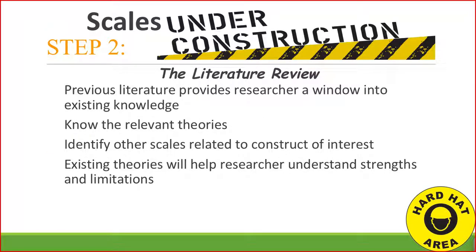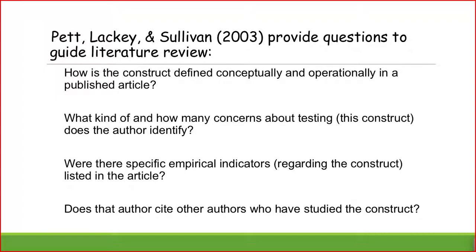Step two is the literature review. Previous literature provides the researcher with a window into existing knowledge. You want to know the relevant theories related to your construct of interest and identify other scales that are related to it. Existing theories help the researcher understand strengths and limitations. Pat Lackey and Sullivan provide questions to guide your literature review: How is the construct defined conceptually and operationally? What concerns about testing this construct does the author identify? Were there specific empirical indicators listed? Does the author cite others who studied the construct?